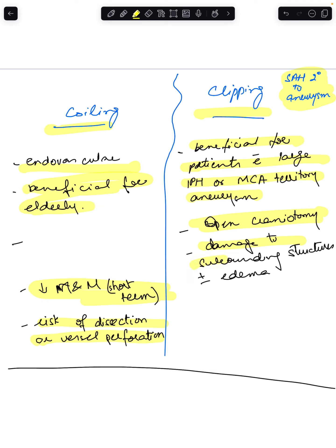There is a risk of damage to surrounding structures and risk of edema. So coiling is the endovascular procedure whereas clipping is done with open craniotomy. Coiling is beneficial for elderly patients because we don't need a big surgery or craniotomy, whereas clipping is done when there is large bleed or MCA territory aneurysm. We need to have more vision, more space, or more visualization.